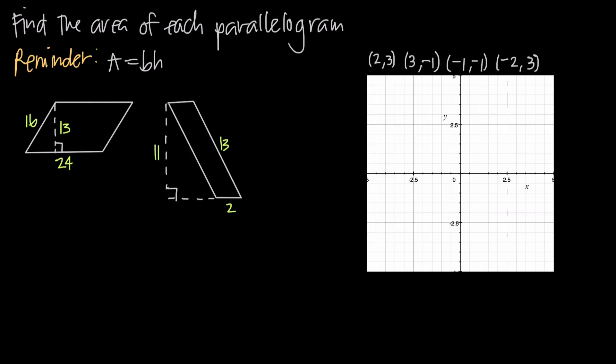In this video, we're going to be doing a couple simple examples about how to find the area of a parallelogram. The formula we're always going to use is A equals BH, which is base times height.